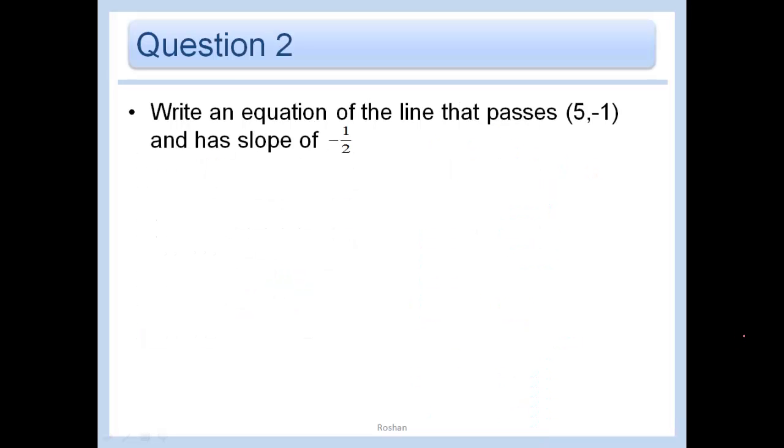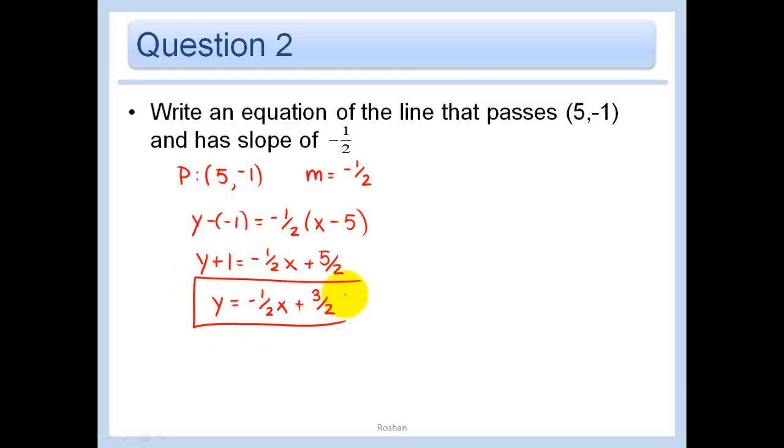For example, right here, write an equation of the line that passes through 5, negative 1, and has a slope of negative 1 half. We don't have the y-intercept here, so it would be much more obvious to use point-slope. We have y plus 1 equals negative 1 half x plus 5 halves. Subtract 1 from both sides, y equals negative 1 half x plus 5 halves minus 2 halves is 3 halves. And that is the equation of our line.